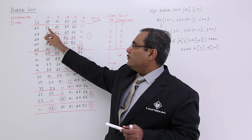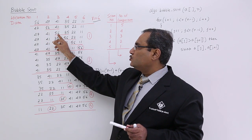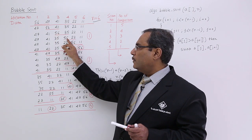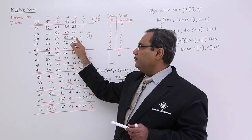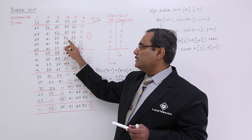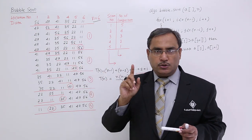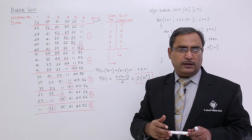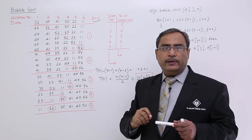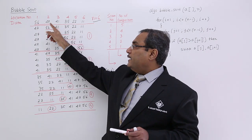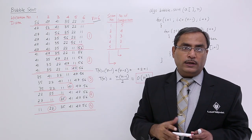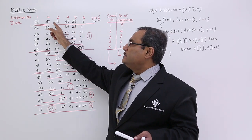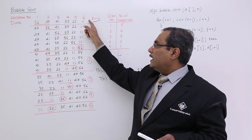If location 1 is greater than location 2, they will get swapped — swapping means interchanging of locations. So 56 is higher, they get swapped. Then 56 is compared with the next element, 56 is higher, they get swapped again. 56 is compared with 22, 56 is higher, they get swapped. Then 56 and 11 are compared — as 56 is higher, they get swapped. This is scan number 1.